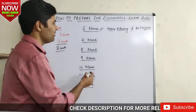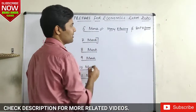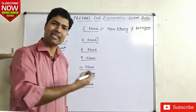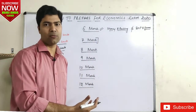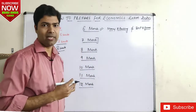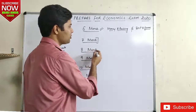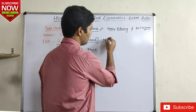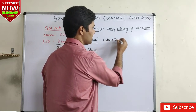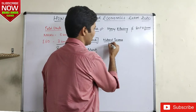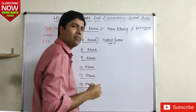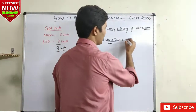On 7th March, commerce students have a whole day. I will tell you that the next unit is macroeconomics — national income, which is unit number 1. You have to complete the determination of national income and employment.